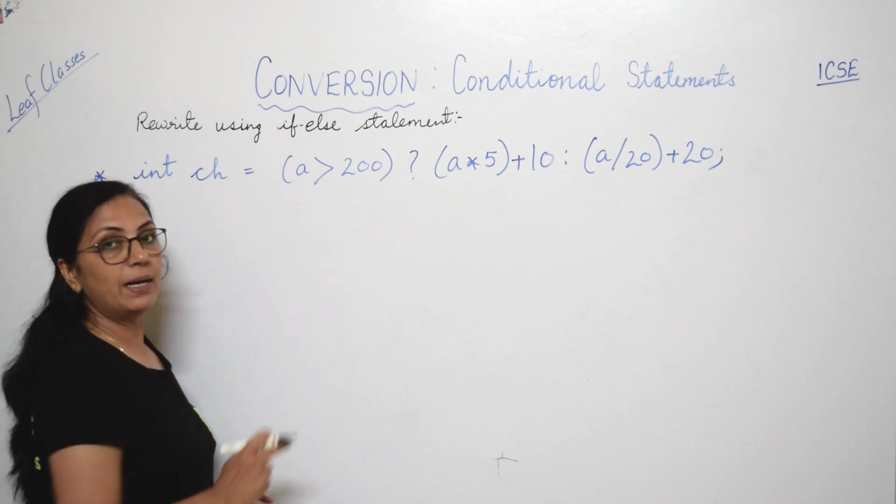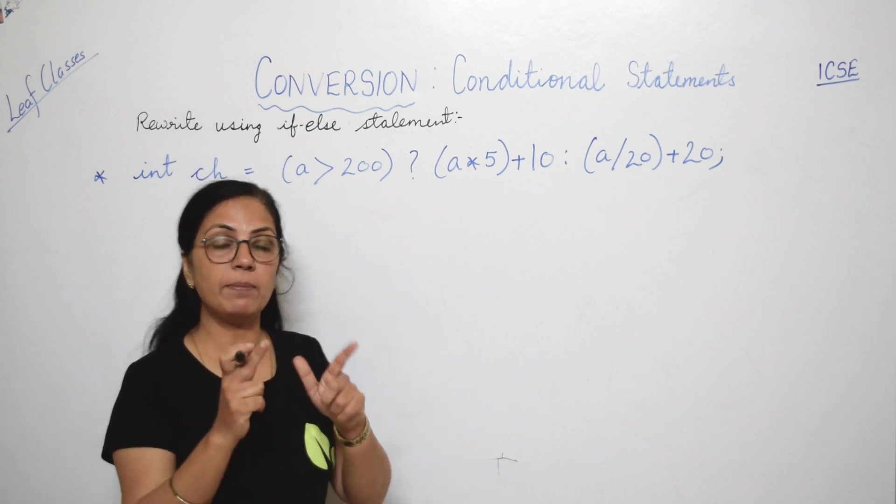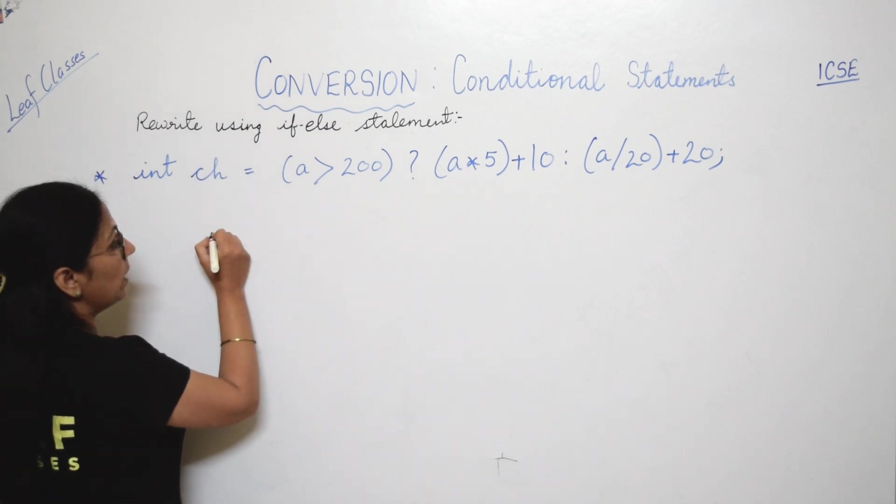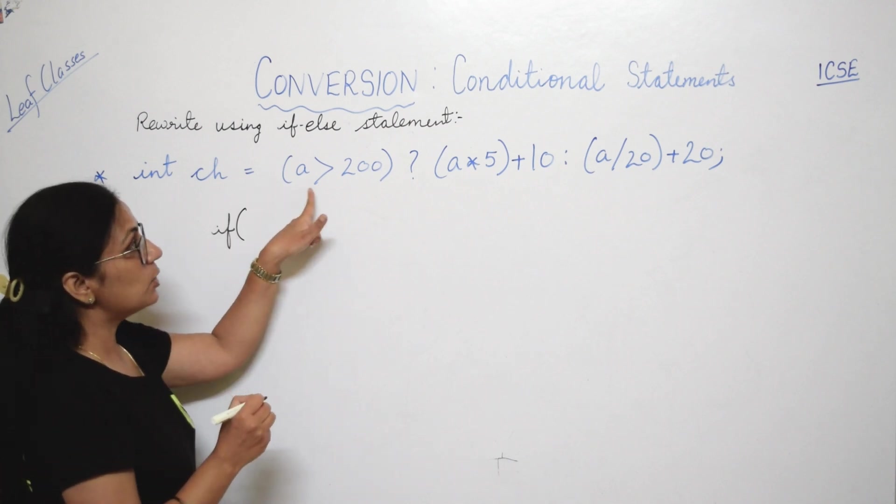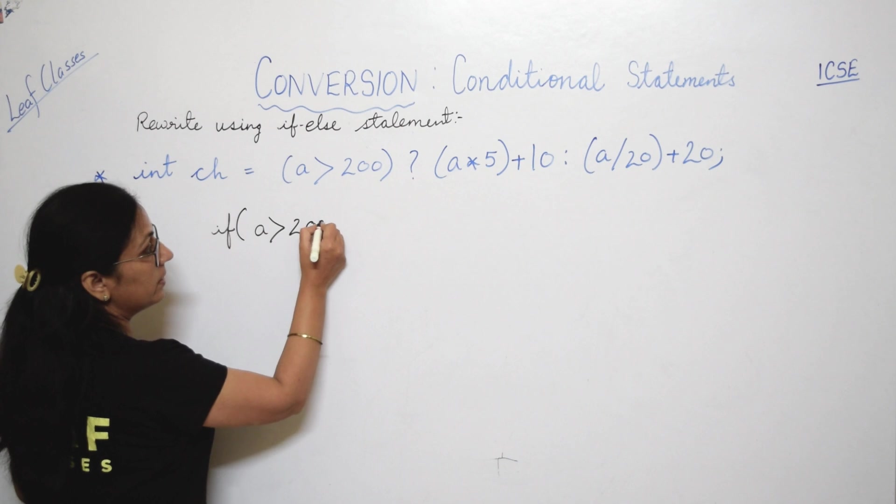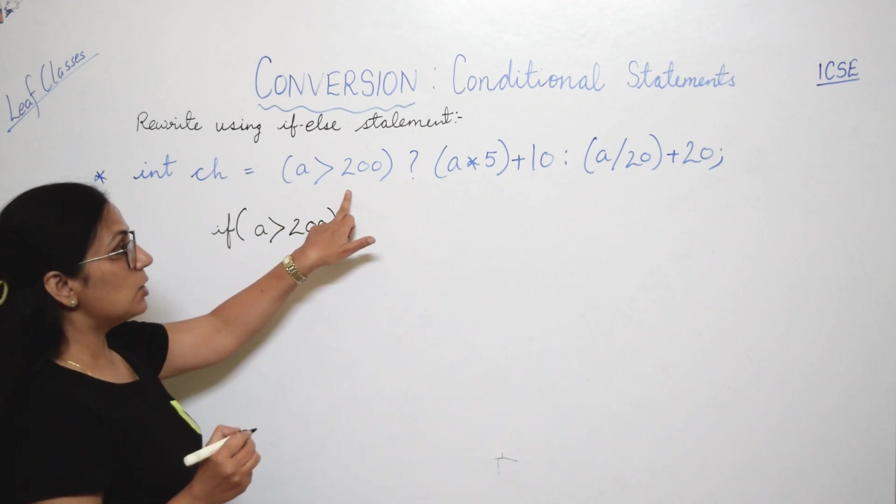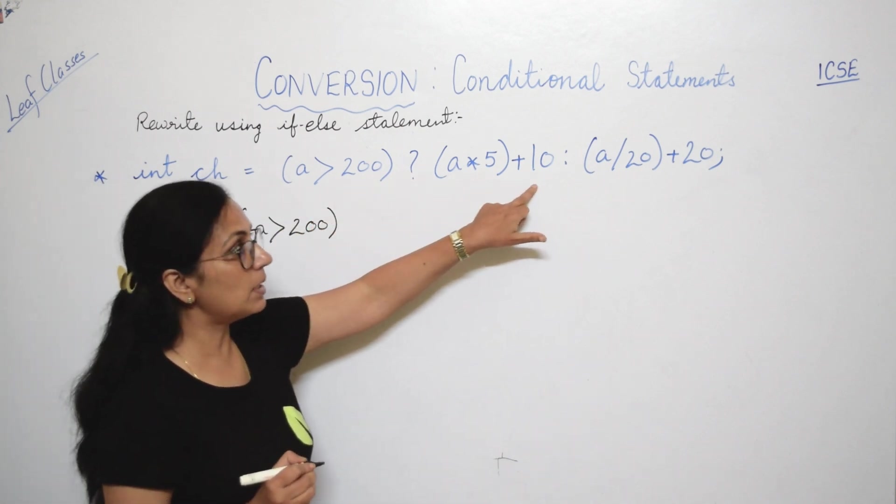So aap sabse pehle dekho yahan par condition kya hai? Agar humko isko if-else mein karna hai, toh if ke baad hum kya rakh dete? Condition. So here you will write if, aur if ke baad you will give the bracket. Condition kya hai? a greater than 200. You have to write the condition.